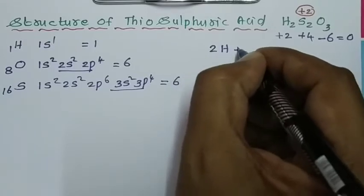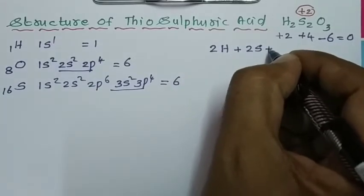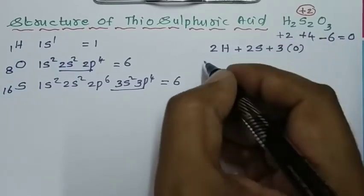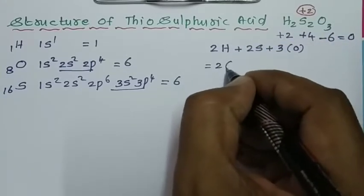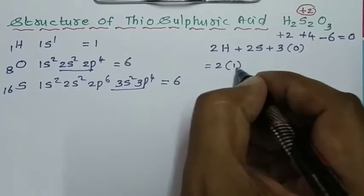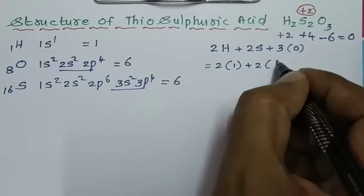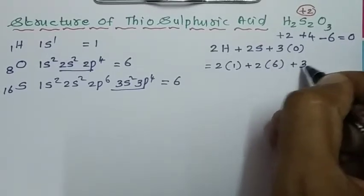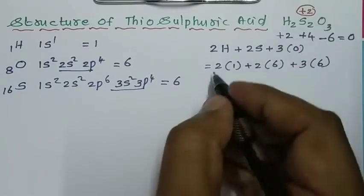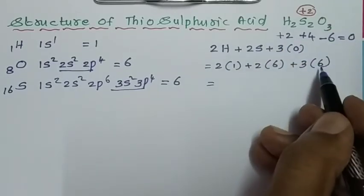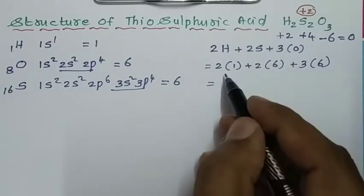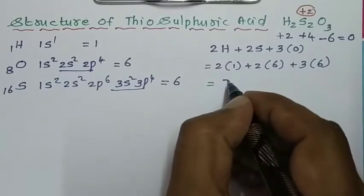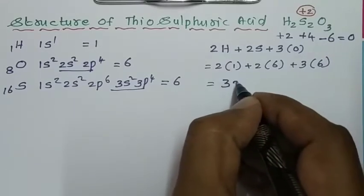Now we have to find the total number of valence electrons in thiosulfuric acid. The molecular formula H2S2O3 contains 2 hydrogen, 2 sulfur, and 3 oxygen. So: 2 hydrogen with valence electron 1 gives 2; 2 sulfur with valence electron 6 gives 12; plus 3 oxygen with valence electron 6 gives 18. Total number of valence electrons equals 32.